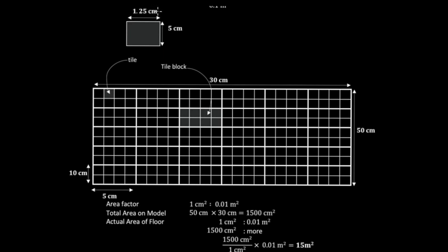Notice that this tile is 1.25 centimeters here, and you want 1.25 to fit across the full 30 centimeters. So you'd calculate 30 centimeters divided by 1.25 centimeters to get the number of tiles going across the width. Using the calculator: 30 divided by 1.25 gives you 24. Notice we have six blocks here, and each block has four tiles going across — that's why you get 24 in total.